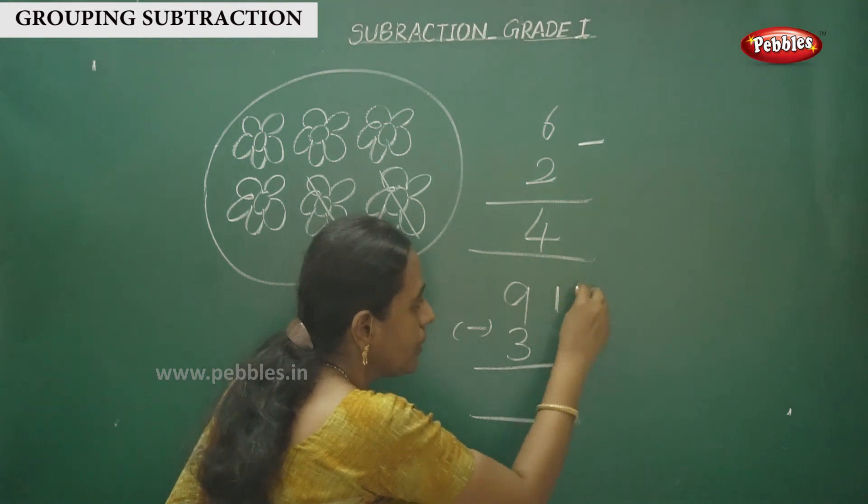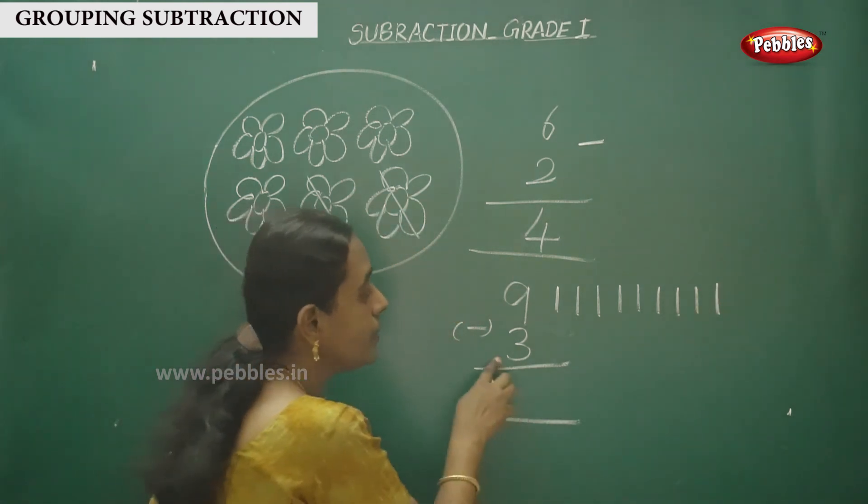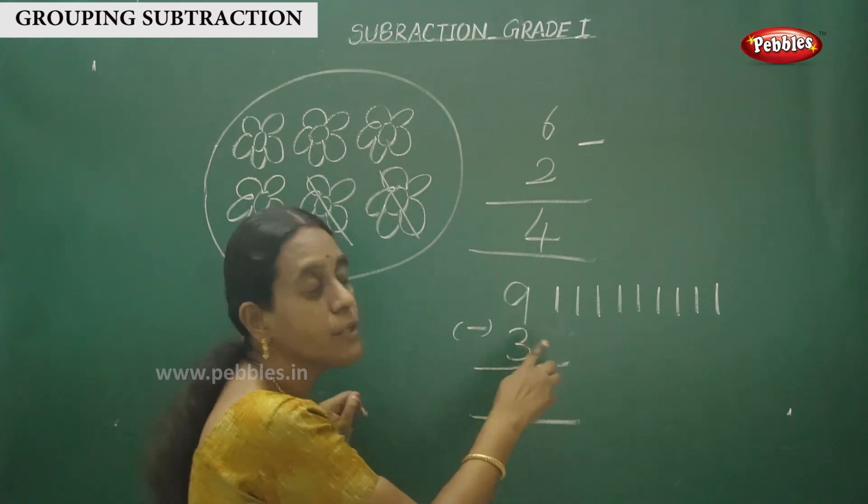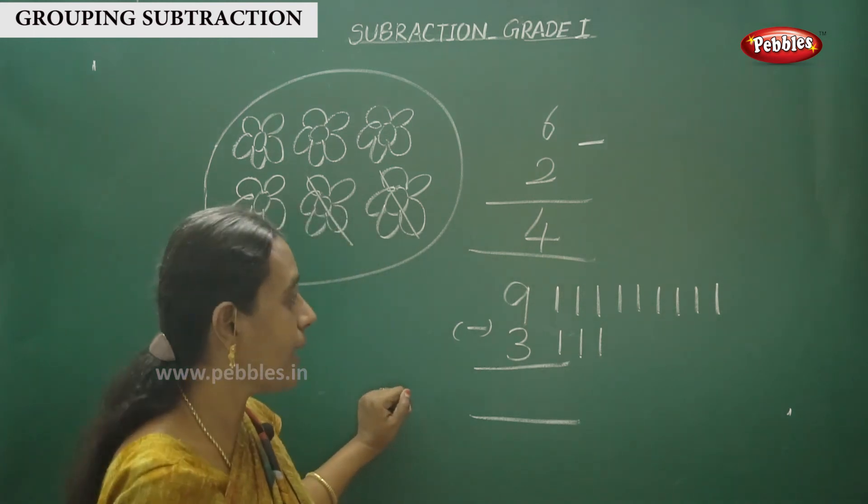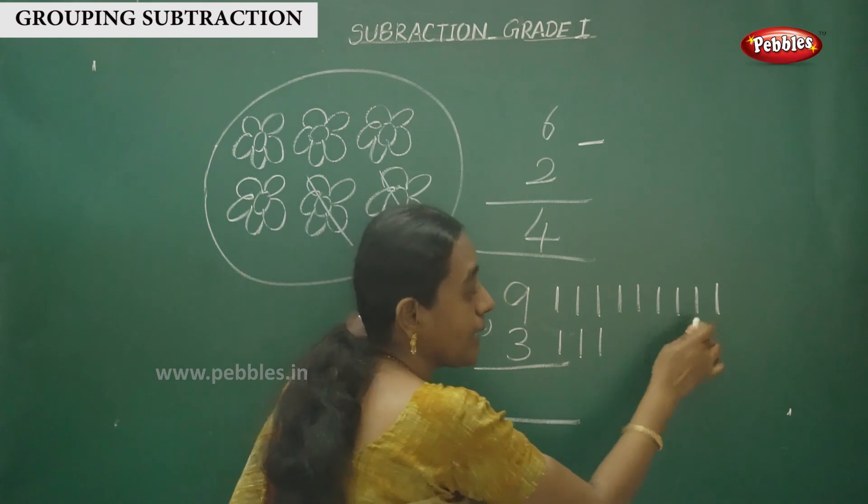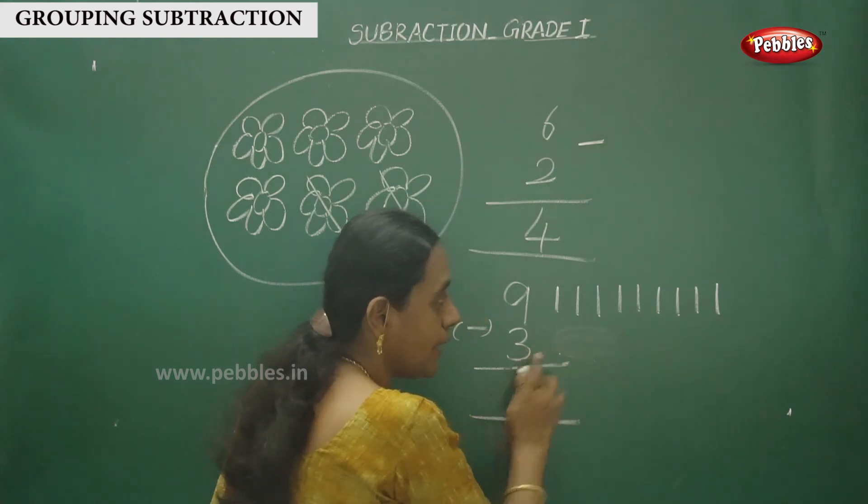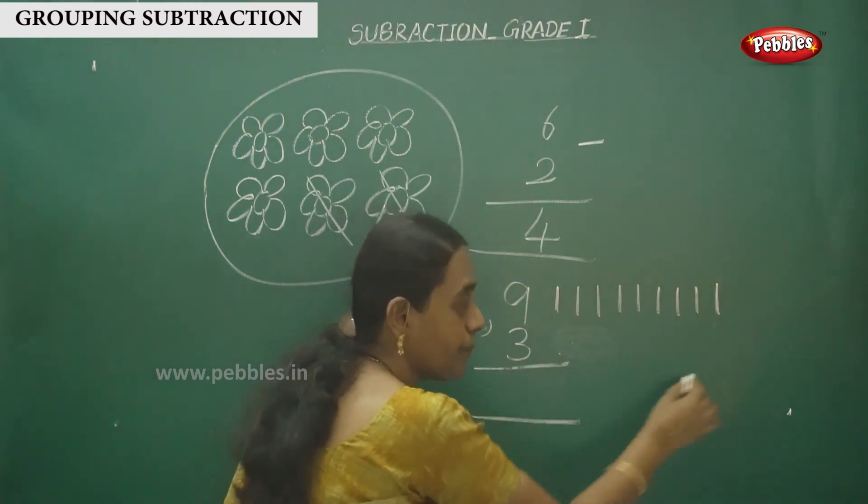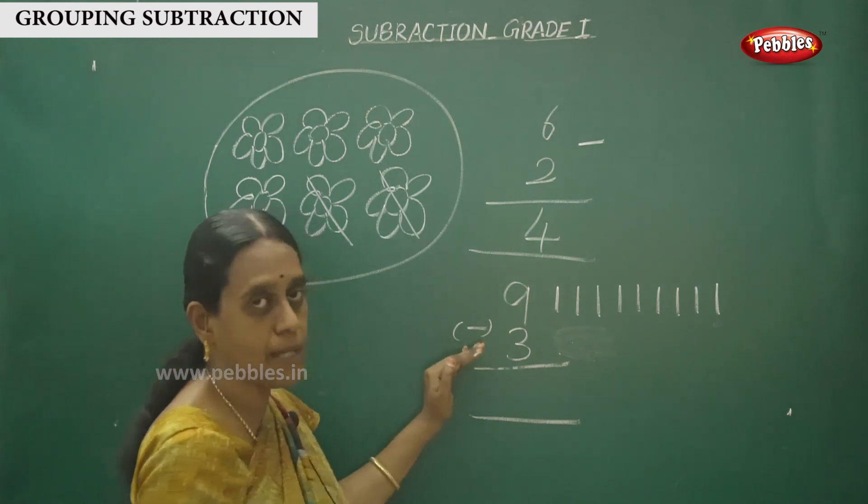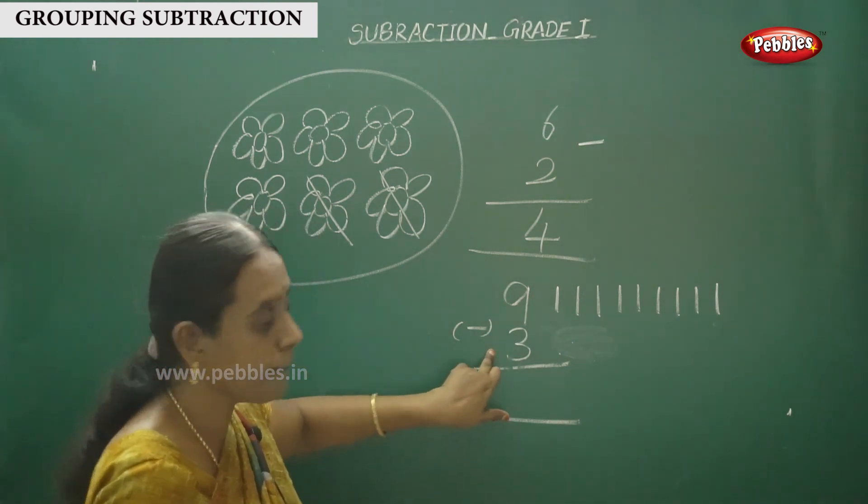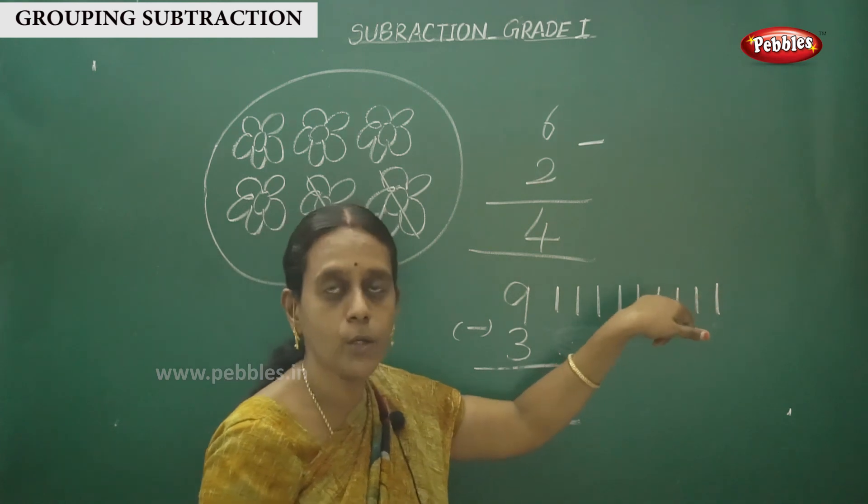By counting: 1, 2, 3, 4, 5, 6, 7, 8, 9. Then here is the number 3, so you have to draw 3 lines. 1, 2, 3. But this 3 you have to strike out from this 9 number. Whatever it may be, this number should be struck out from the first beginning number.